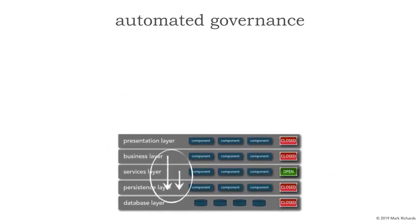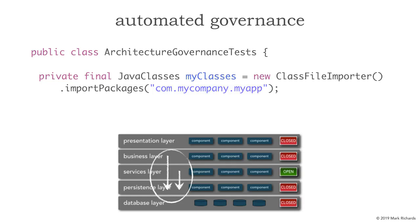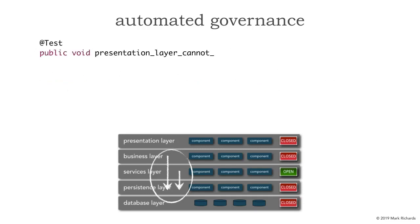Let's try ArcUnit first and see how we can write a programmatic test to automate the governance of this architecture decision. The first thing we're going to do in ArcUnit is define a class called ArchitectureGovernanceTests. I need to load up those classes by importing packages using the ArcUnit API — using the ClassFileImporter to import packages for com.mycompany.myapp, which is basically the root package structure. Now let's write a test to govern this. I love naming these to describe the architecture decision: 'presentation layer cannot access persistence layer.'